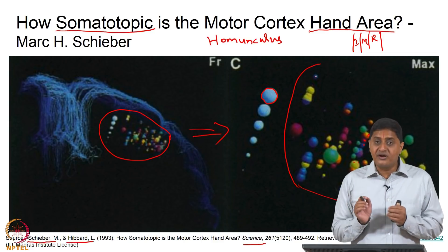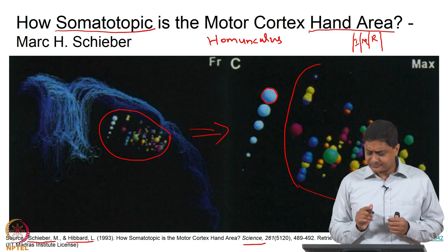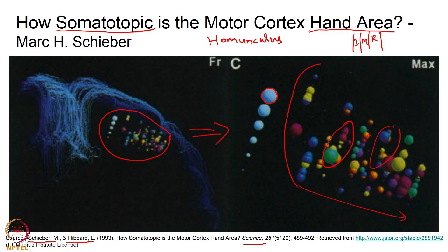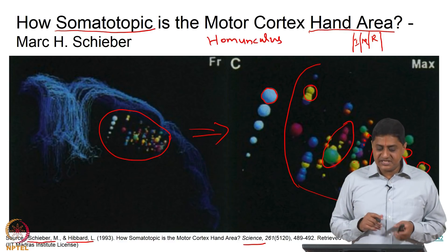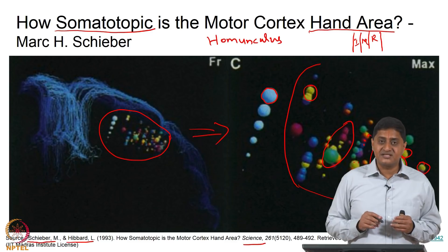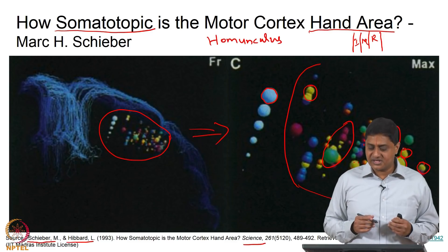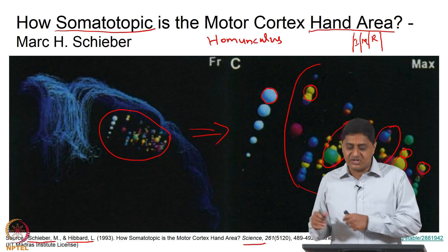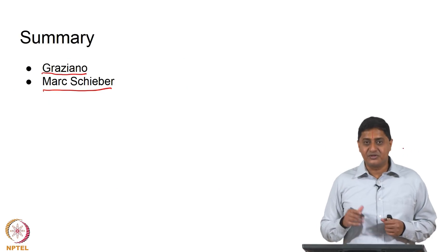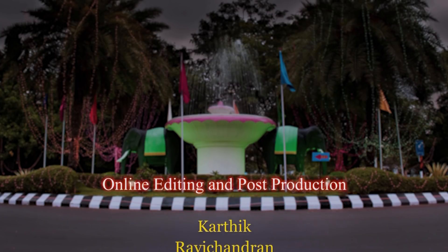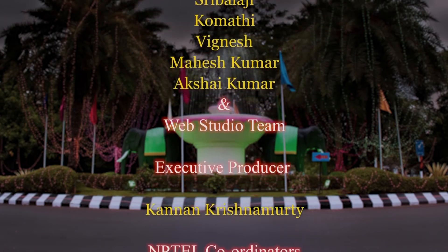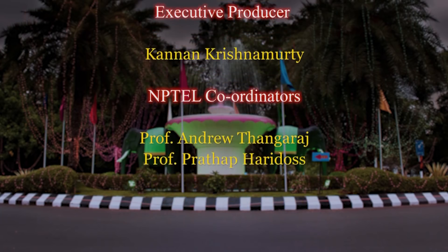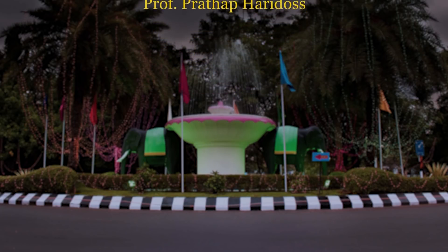This is a mosaic representation with great convergence and divergence. Within one region of the primary motor cortex, there is divergence onto multiple fingers. Also, neurons from multiple areas can converge onto the same finger. This challenges the idea that somatotopy in the motor cortex hand area is strictly present with strict boundaries. In today's class we saw Graziano's work on long-lasting stimulation producing smooth coordinated movements, and Schieber's work showing a distributed, mosaic representation of the hand area. Thank you very much.